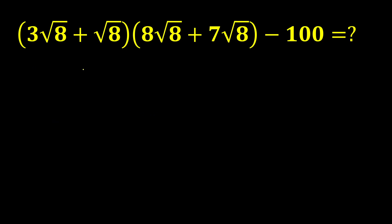Hey everyone, in this video we will solve this third problem. The question says 3√8 + √8 into 8√8 + 7√8 - 100. Now if you notice here, these two are like surds.